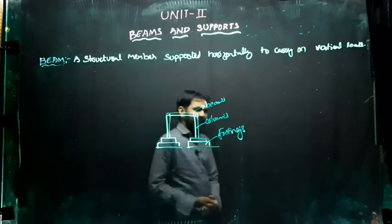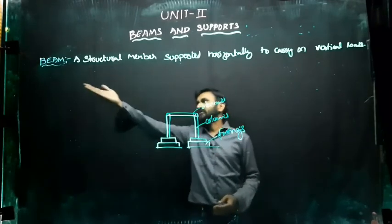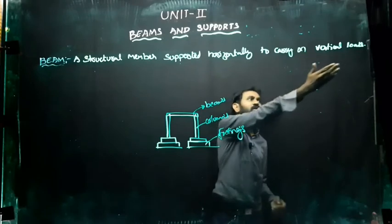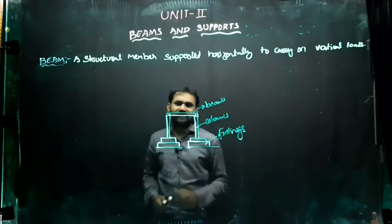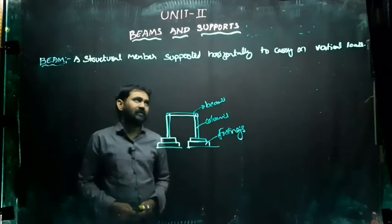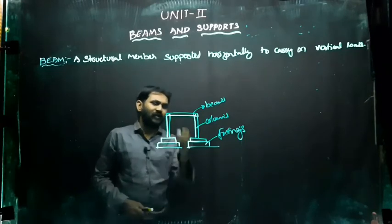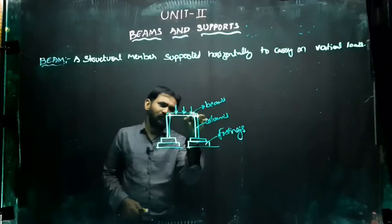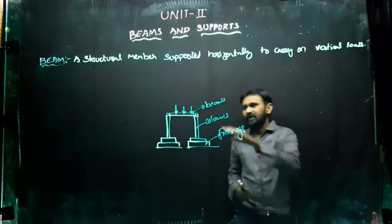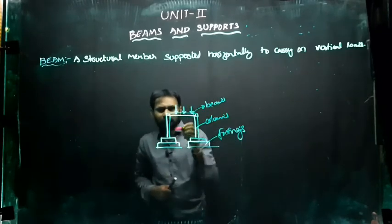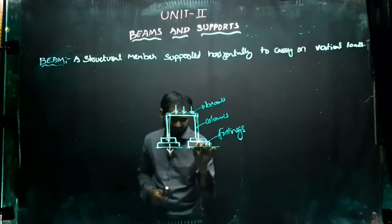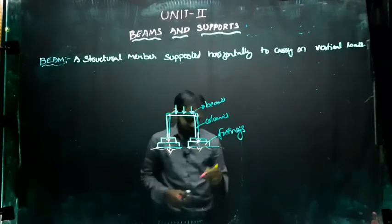So let us see the definition of a beam. A beam is a structural member supported horizontally to carry the vertical loads. It is called a structural member because it is made up of steel and concrete. It is used to carry the vertical loads — whatever loads come from the top are taken by the beams. These beams transfer this load to the columns, then to the footings, and from the footings it is transmitted safely to the ground level.